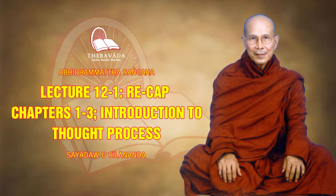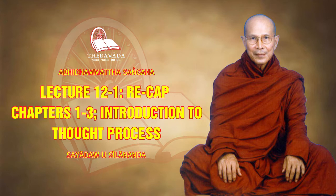After the kamavacara sobhana cittas, we have rupavacara cittas — what people now know as jhana cittas. Jhana cittas are higher states of consciousness, higher than akusala, ahetuka, and kamavacara. In order to attain rupavacara kusala cittas, we need to practice samatha meditation. They are divided into kusala, vipaka, and kiriya — wholesome, resultant, and functional types of consciousness.